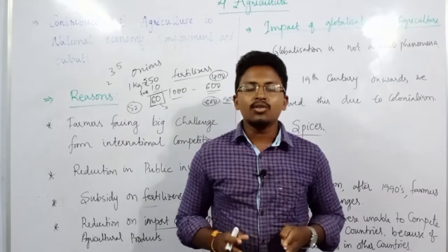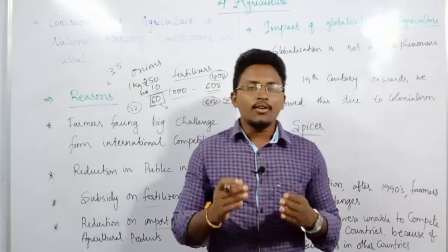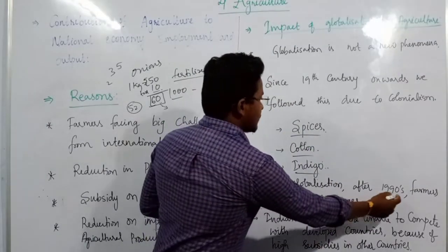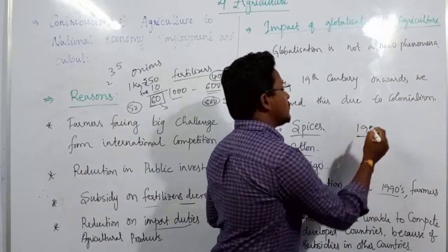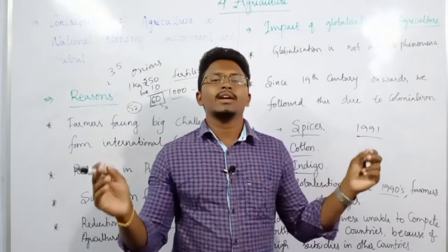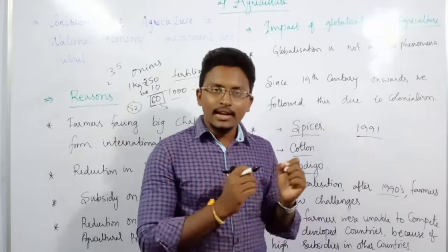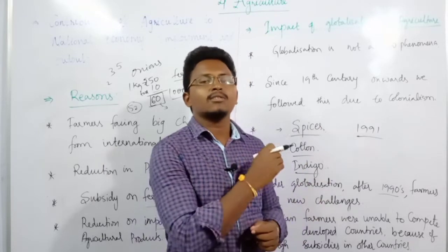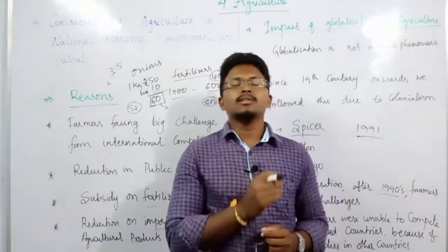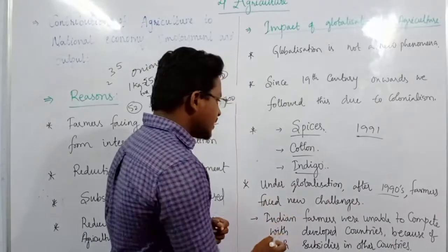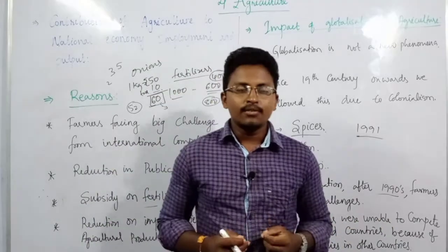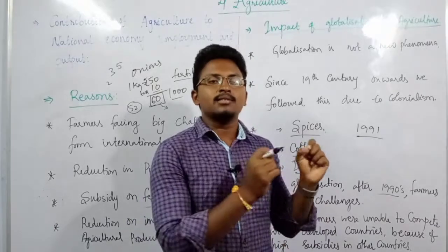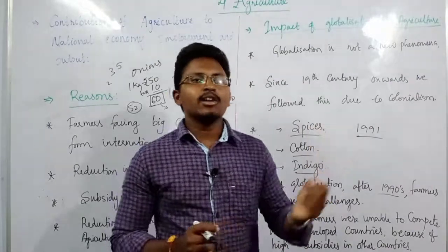The original modern globalization began after independence, when the Indian government opened our country to all other countries. In 1991, the government brought reforms saying we are now open to every country — we will export and import anything. But once globalization officially started, there was a major impact on agriculture. Indian farmers were unable to compete with developed countries, even though we were among the largest producers of rice, cotton, and jute.